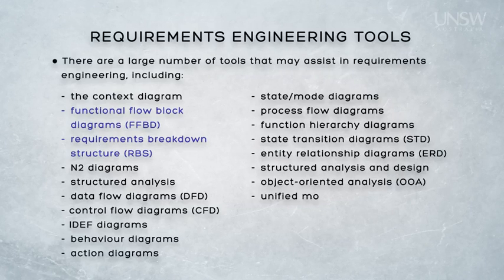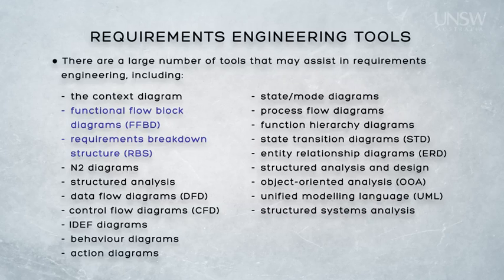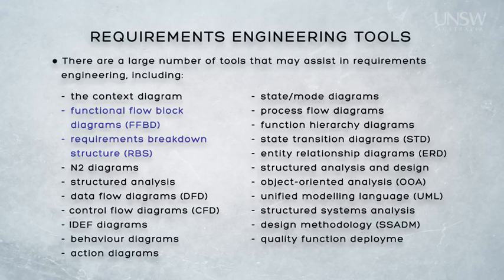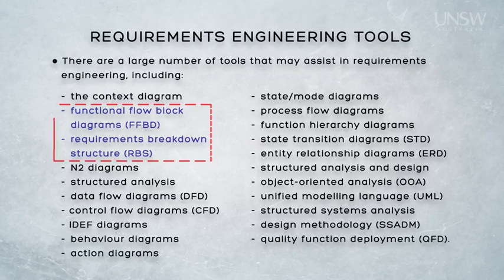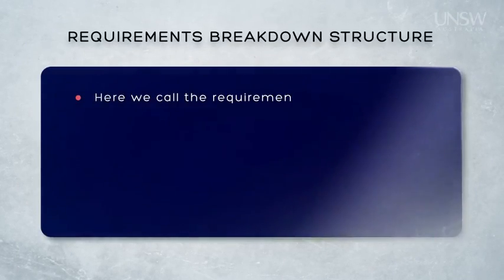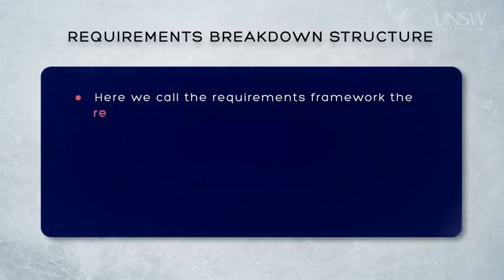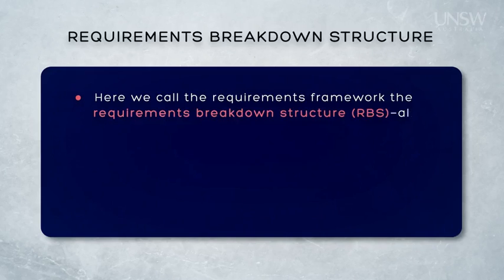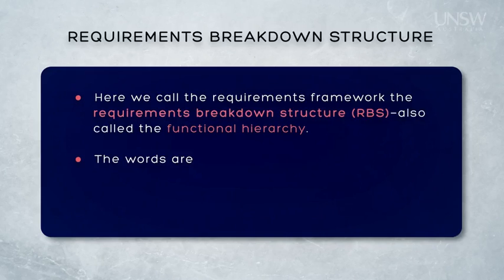Here we focus mostly, for simplicity and time, on the two probably most important tools: the requirements breakdown structure (the RBS) and the functional flow block diagrams (the FFBDs). We call the requirements framework the requirements breakdown structure. We said before that's also called the functional hierarchy, but we'll refer to it as the RBS.